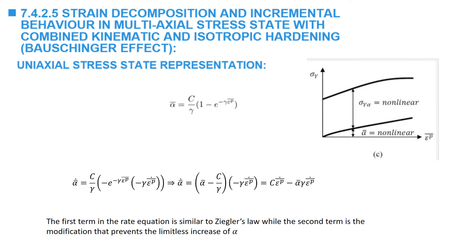The rate of change of alpha — when we take the derivative with respect to t, we get alpha dot. The only variable that changes is the equivalent plastic strain. When we take the derivative, we get two terms: c multiplied by the equivalent plastic strain rate, minus alpha bar gamma multiplied by the equivalent plastic strain rate. The first term in this rate equation is similar to what is referred to in the literature as Ziegler's law, while the second term is the modification that prevents the limitless increase of alpha.